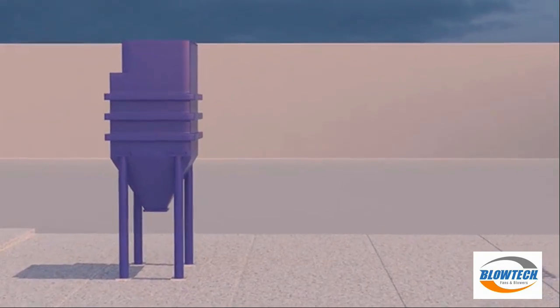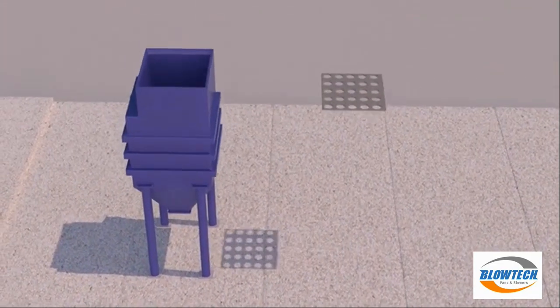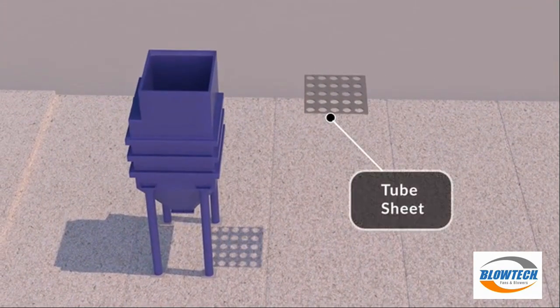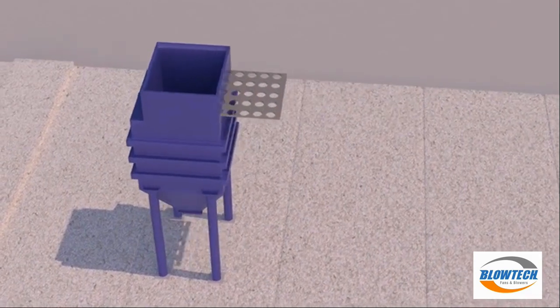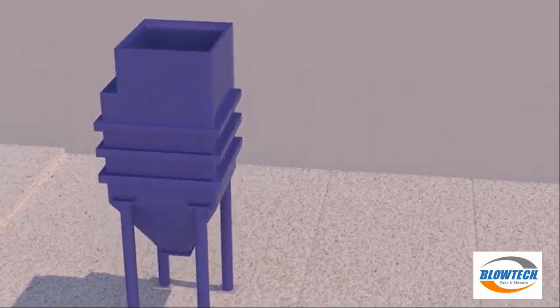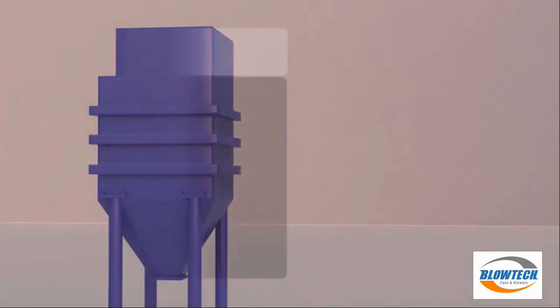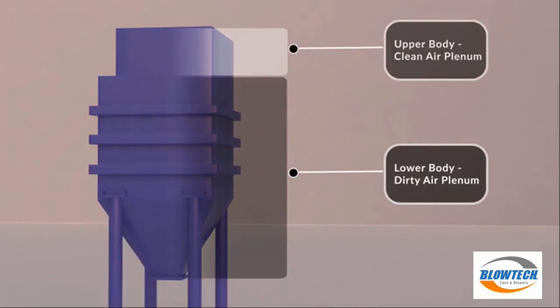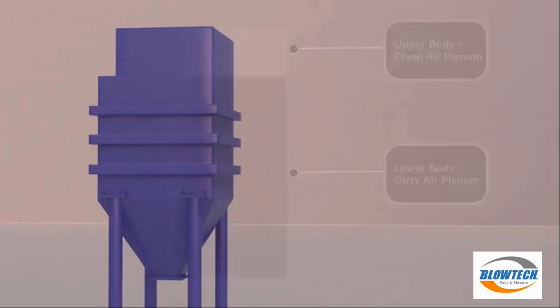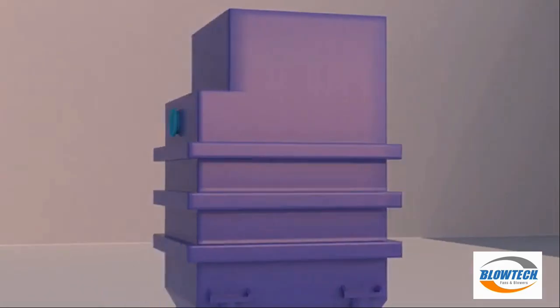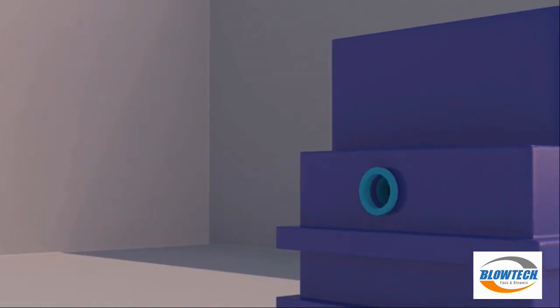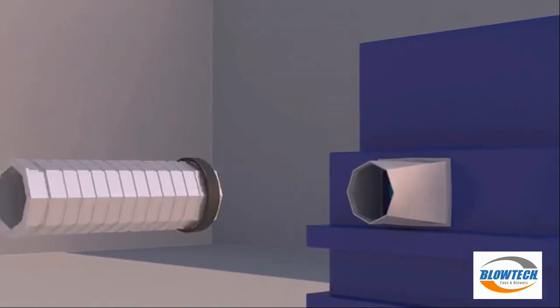It is divided by a tube sheet into two parts. The lower body is called dirty air plenum, and the upper body is called clean air plenum. The lower body includes an inlet which is connected to flexible suction pipes.